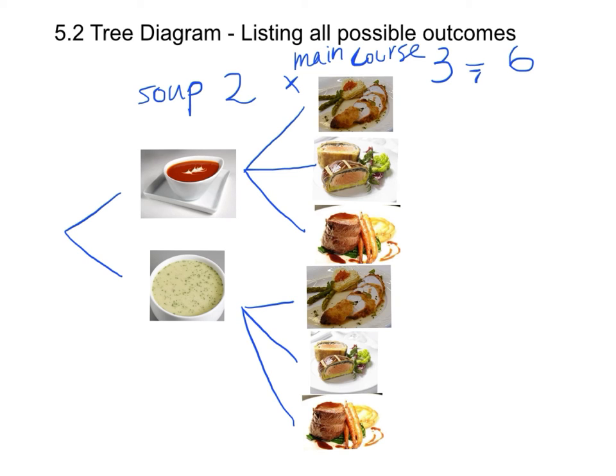We can write down the outcomes. If we use symbols to represent each option, we have R for red soup, W for white soup, C for chicken, F for fish, and B for beef.